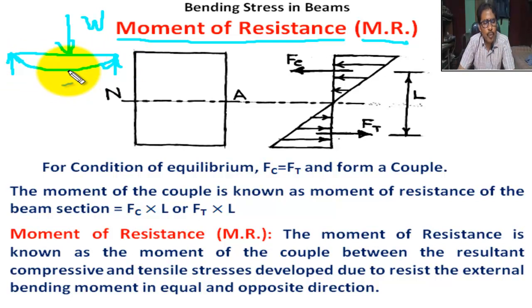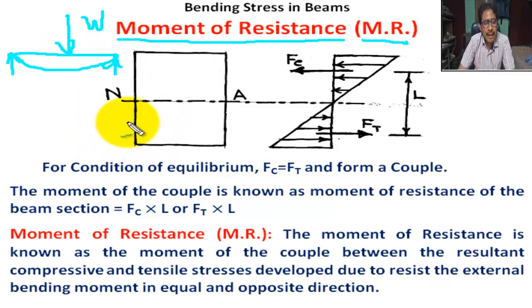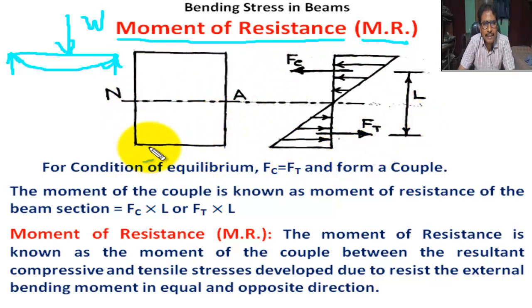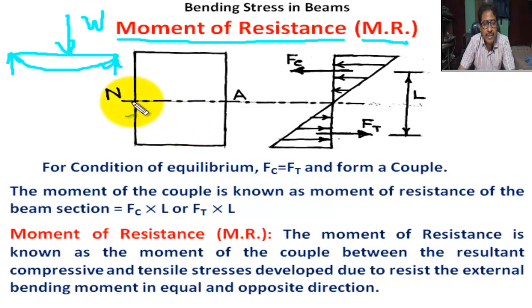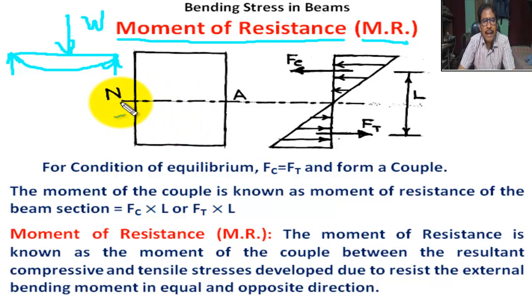Stress is developed within the material to resist this bending in the opposite direction. This is the cross-section of the beam and this is the stress distribution diagram. NA is the neutral axis. At this cross-section of the beam under bending, compressive stress is developed on the upper side of NA, and tensile stress is developed below the NA.